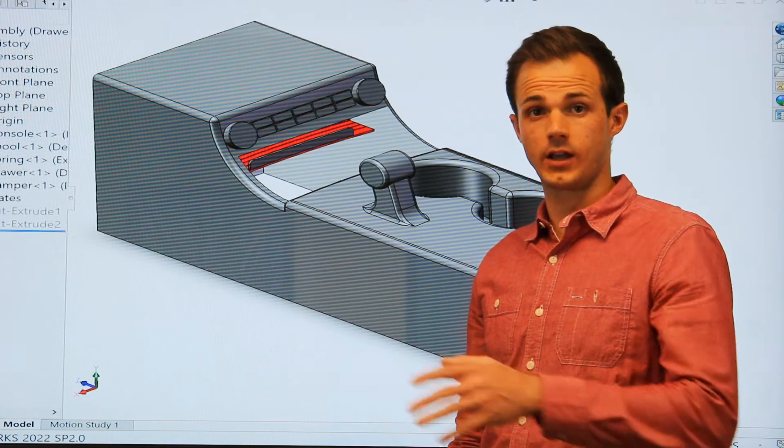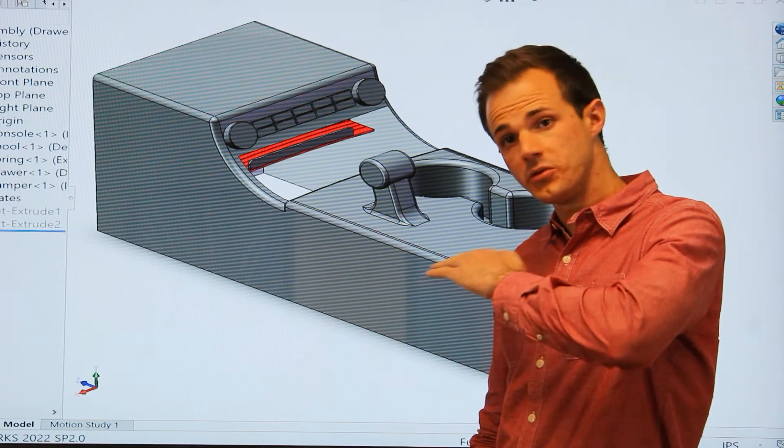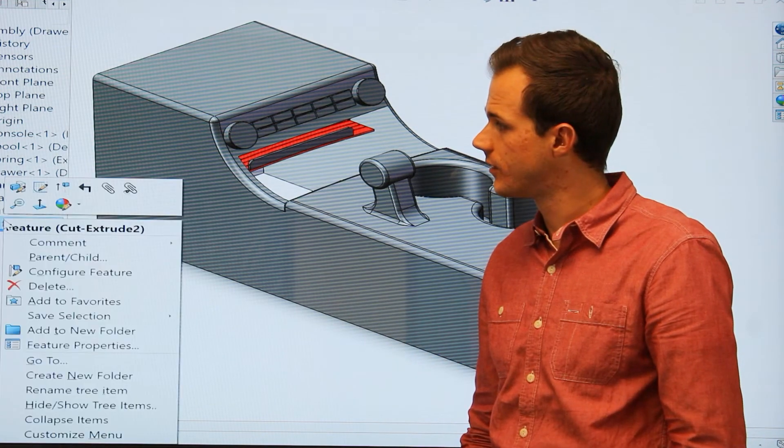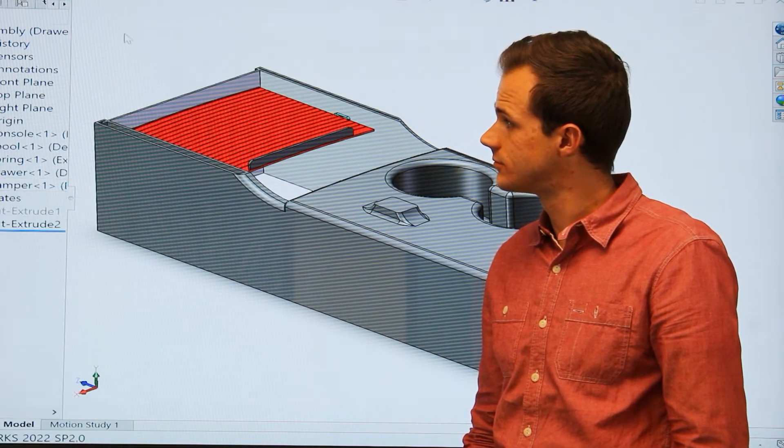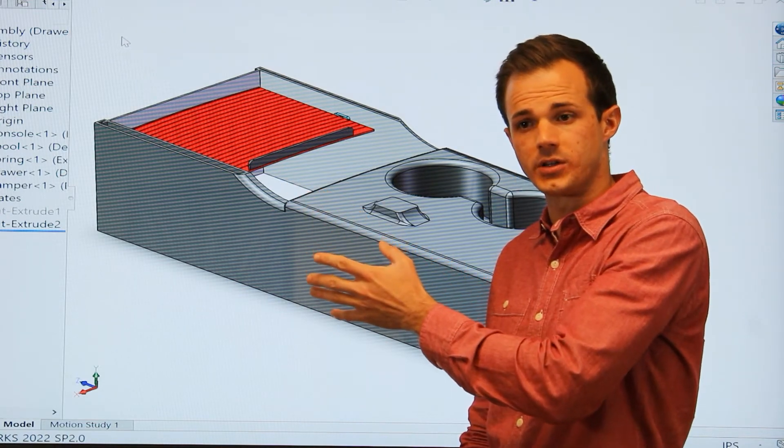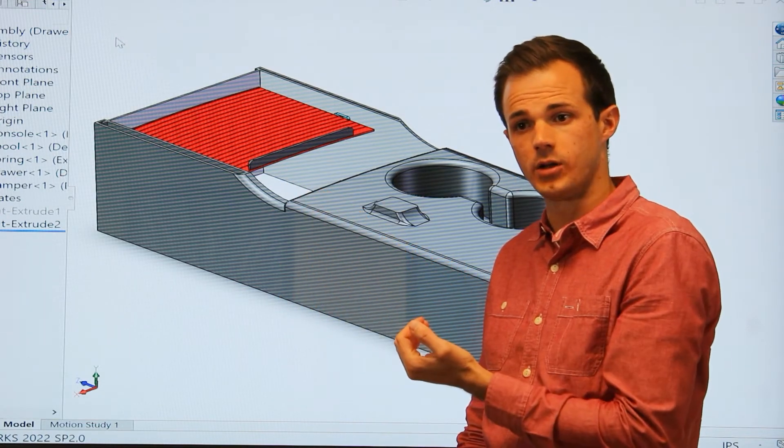We're now taking a look at the top view of the console again. But let's remove the top portion so we can see underneath what's going on. From this view, we can see the open drawer, and it's latched open in this position, but the spring is exerting a force trying to pull it closed.